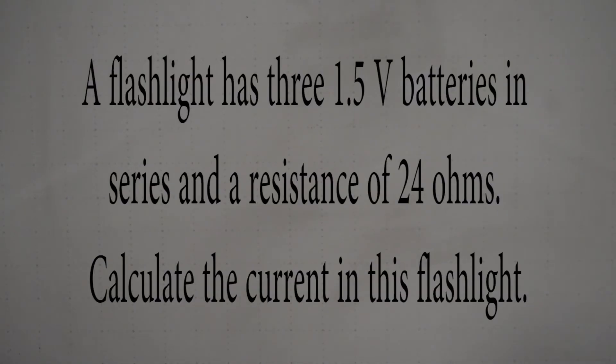Our last question here is a two-part question. It asks: a flashlight has three 1.5 volt batteries in series and a resistance of 24 ohms. Calculate the current in the flashlight.